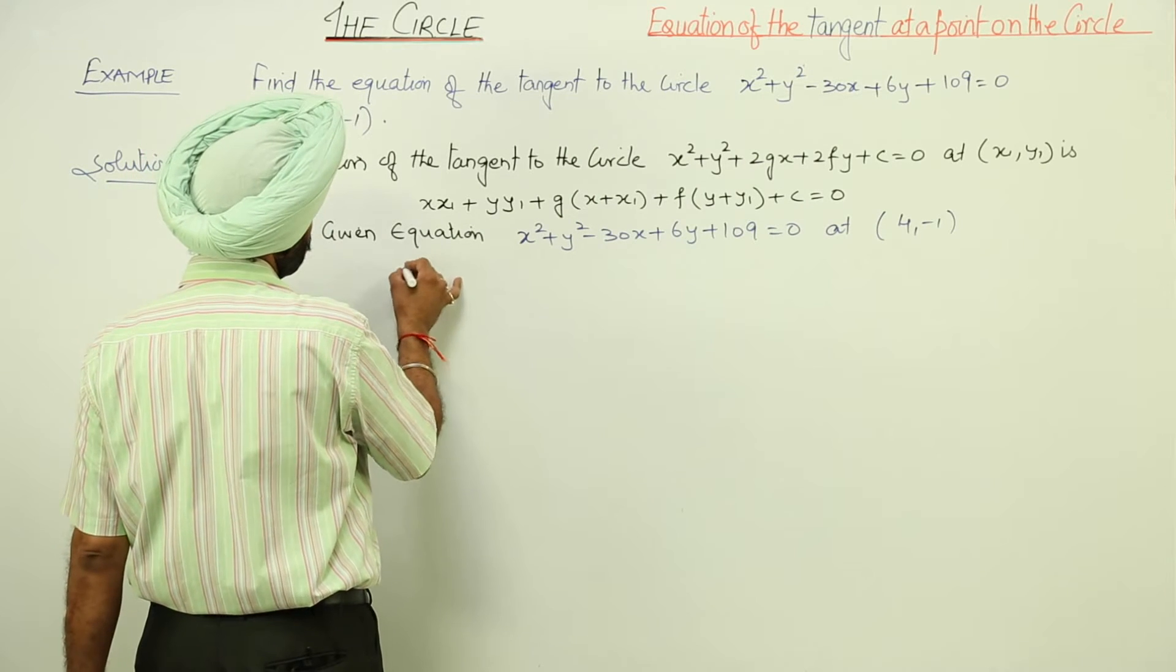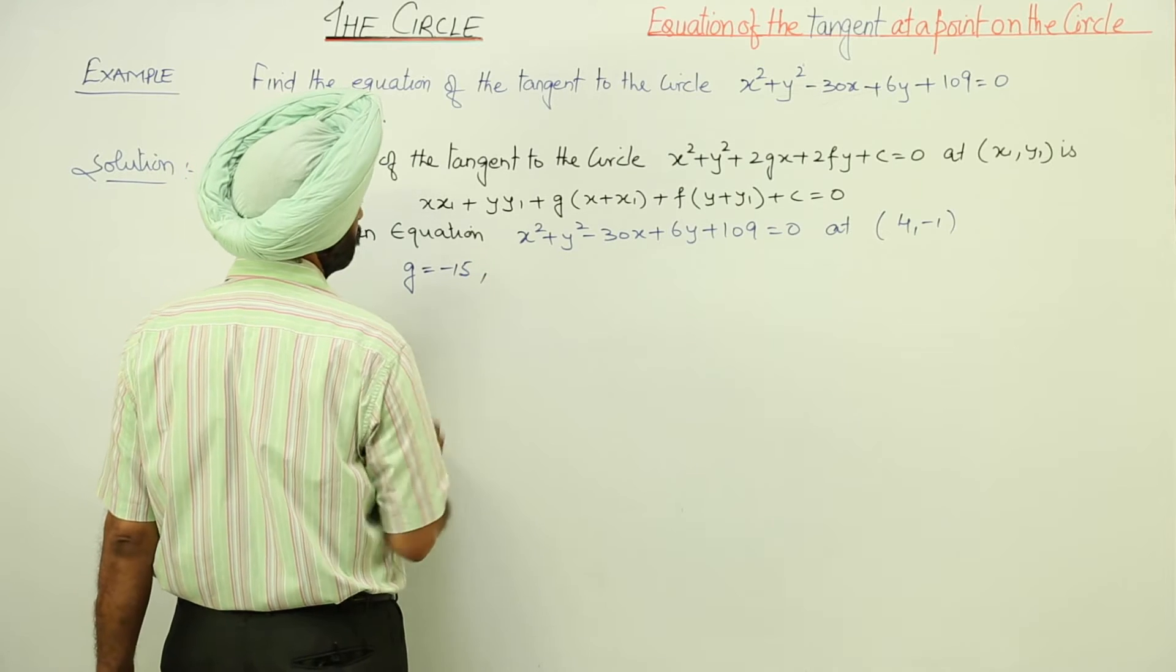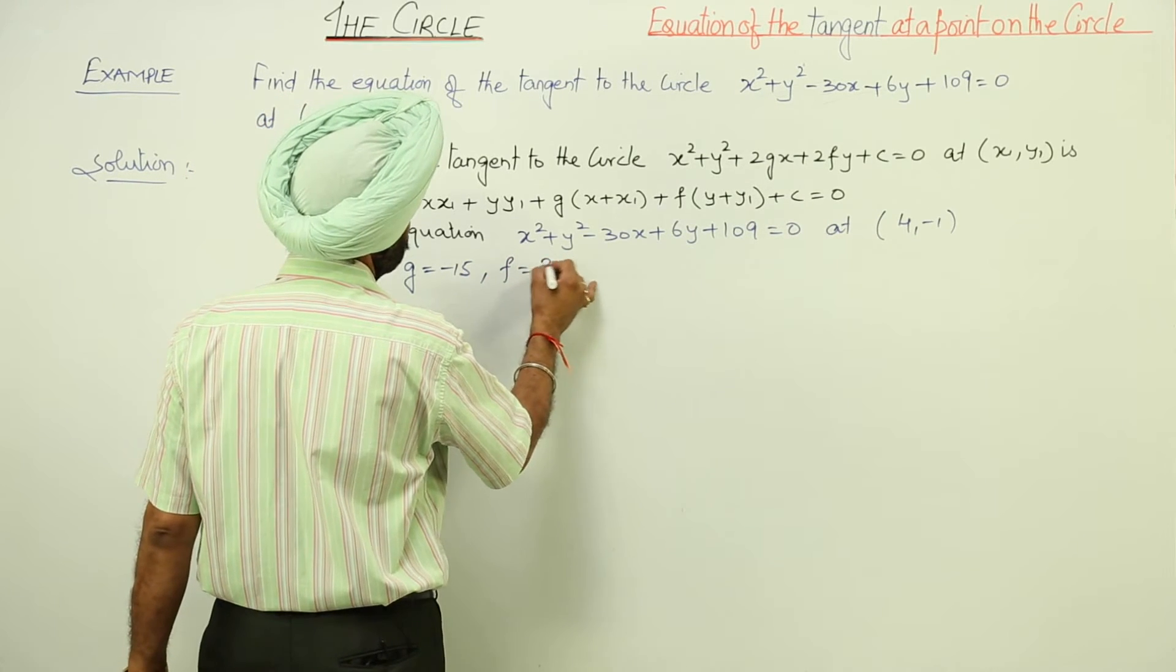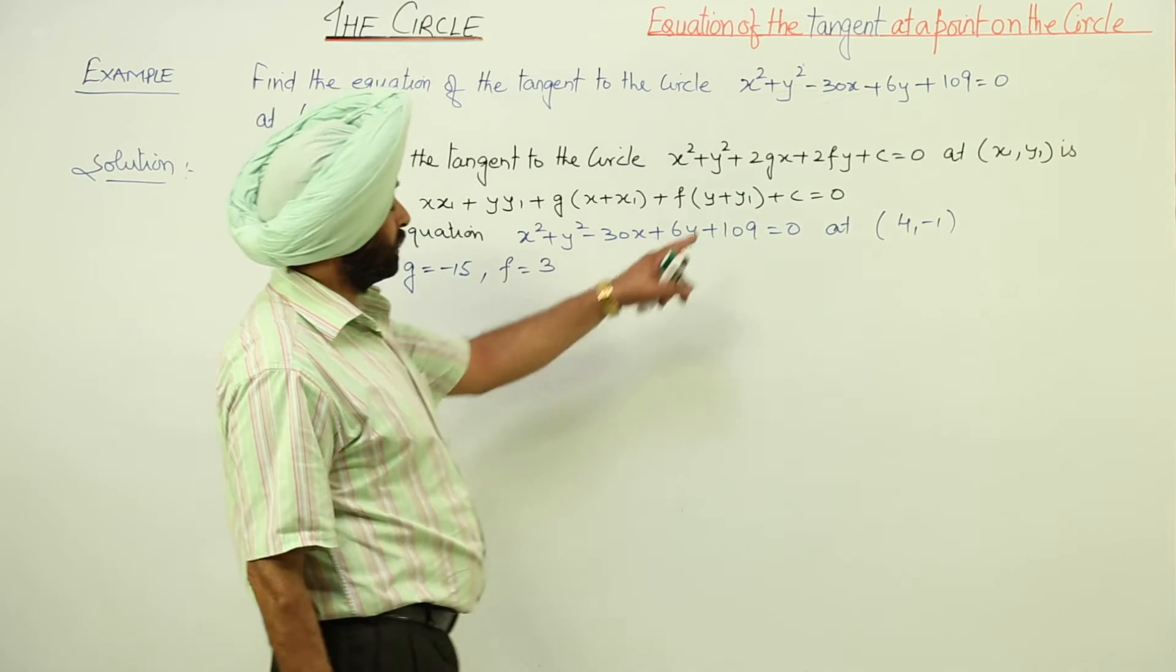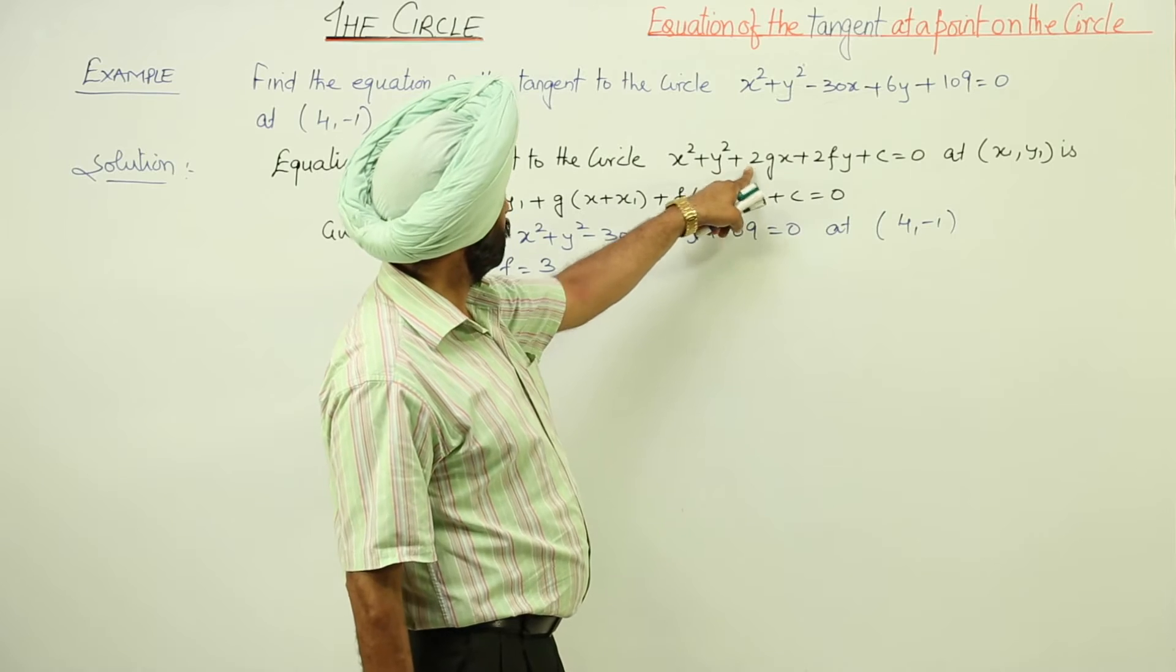g = -15 and f = 3, because here we are comparing 2g, we just want g.